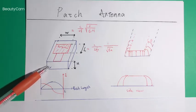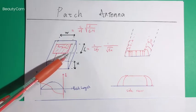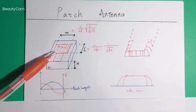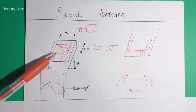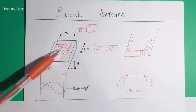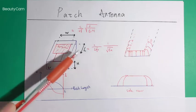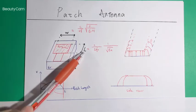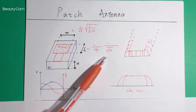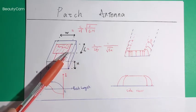And what's the working frequency of this patch antenna we design. This working frequency can help us decide what's the width and what's the length of the patch antenna. Normally the patch antenna has a length of a half-guided wavelength.